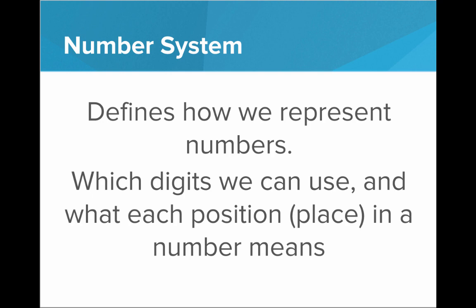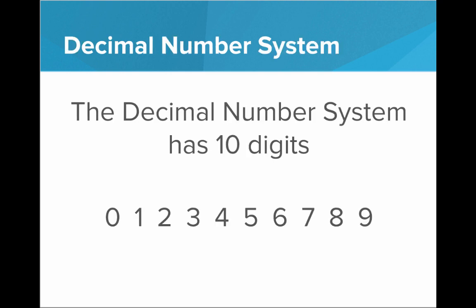For example, let's take the decimal number system. The decimal number system is the number system that we use in our everyday lives, and it has 10 digits, 0 through 9. You're probably already comfortable making numbers in the decimal number system. We have 10 fingers, 10 toes — it's very easy for us to think in terms of 10.